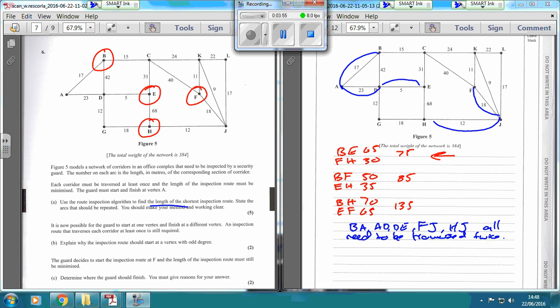And you've got to find the length of the inspection route, so the length of the entire graph is 384, so it's going to be 384 plus whatever we've got, which is 75, so 389, 459. 459 meters. I believe that's that one.